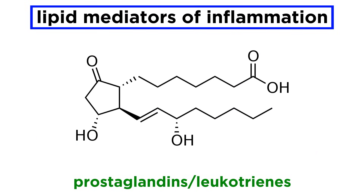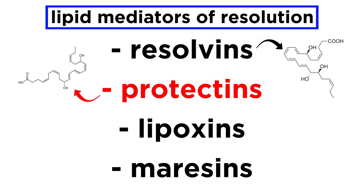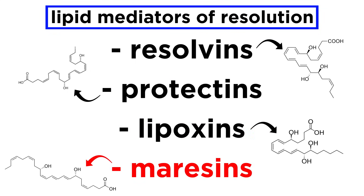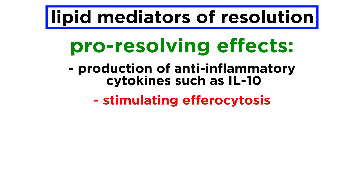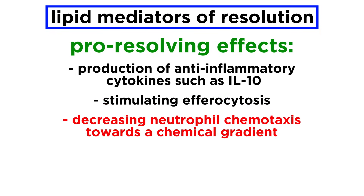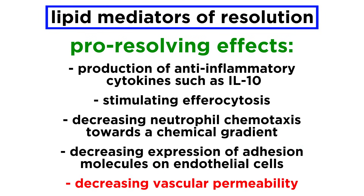Just as the prostaglandins and leukotrienes are lipid mediators of inflammation, there are several classes of lipids involved in resolution. These mediators are derived from polyunsaturated fatty acids, and include resolvins, protectins, lipoxins, and maresins. These lipids have a huge range of pro-resolving effects, which include production of anti-inflammatory cytokines like IL-10, stimulating efferocytosis, decreasing neutrophil chemotaxis towards a chemical gradient, and decreasing expression of adhesion molecules on endothelial cells.